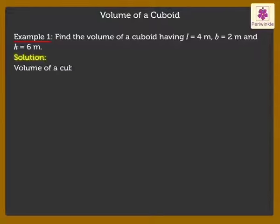Volume of a cuboid is equal to length into breadth into height, which is equal to 4 into 2 into 6, which is equal to 48 cubic centimeters.